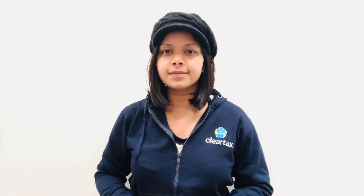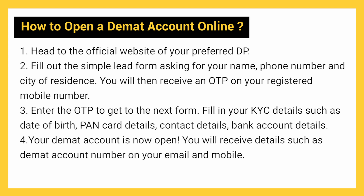There is a more convenient way of opening a DMAT account online. Equipped with only a computer, laptop, tab or smartphone, you can open your DMAT account in just a few minutes. The first step is to head to the official website of your preferred depository participant. The second step is to fill out a simple lead form asking for your name, phone number and city of residence — you will receive an OTP on your registered mobile number. Enter the OTP, then fill in your KYC details such as date of birth, bank card details, contact details and bank account details. Your DMAT account is now open, and you will receive details such as the DMAT account number on your email and phone. An investor can have multiple DMAT accounts, with the same or different DPs, as long as the required KYC details are provided for all applications.